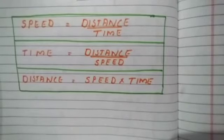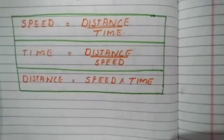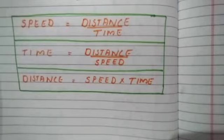Speed equals distance upon time. Time equals distance upon speed. And distance equals speed multiplied by time.